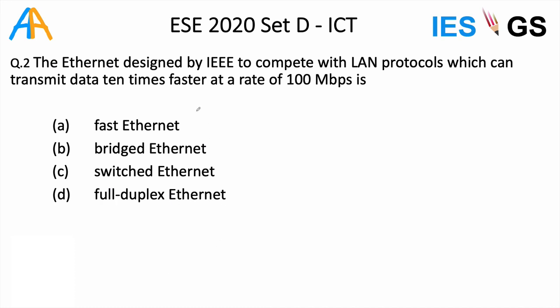Here I am discussing the solutions for ICT questions from ESE 2020 GS paper, starting from question number two. In set D, the second question asks about the network designed by IEEE to compete with LAN protocols which can transmit data 10 times faster at a rate of 100 Mbps. We have seen what is Ethernet in ICT classes.